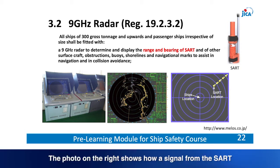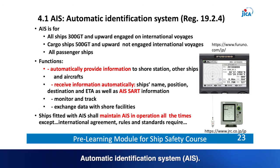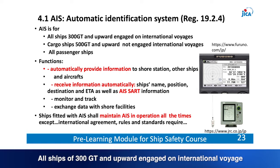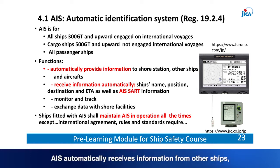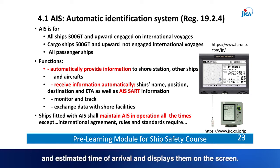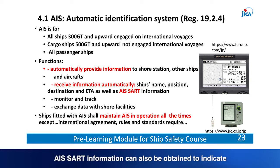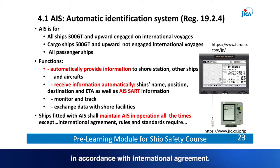The photo shows how a signal from the SART is detected and indicated on the radar display. Automatic Identification System (AIS): all ships of 300 gross tonnage and upward engaged on international voyages shall be provided with AIS. AIS automatically receives information from other ships such as name, position, destination and estimated time of arrival, and displays them on screen. AIS-SART information can also be obtained to indicate the range and distance of the SART. AIS shall be operational at all times, except in certain cases in accordance with international agreement.